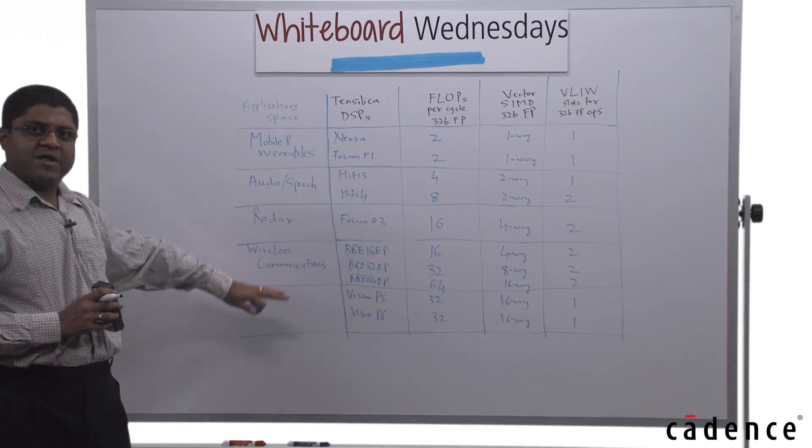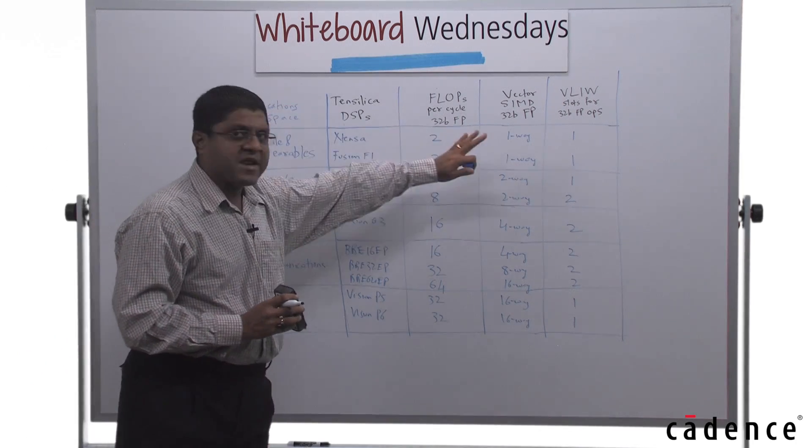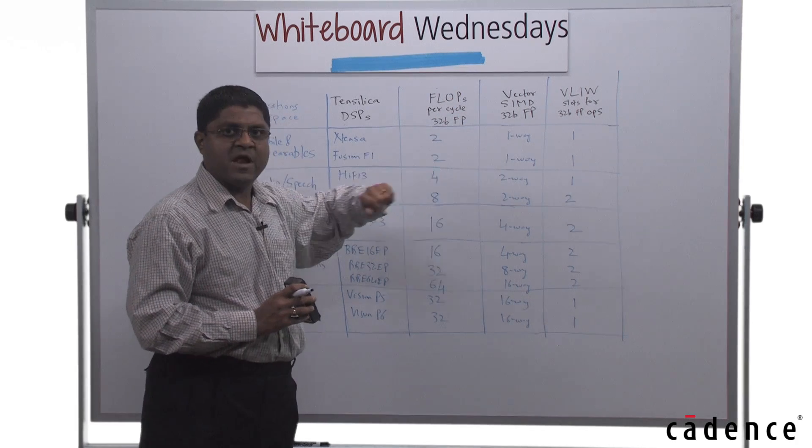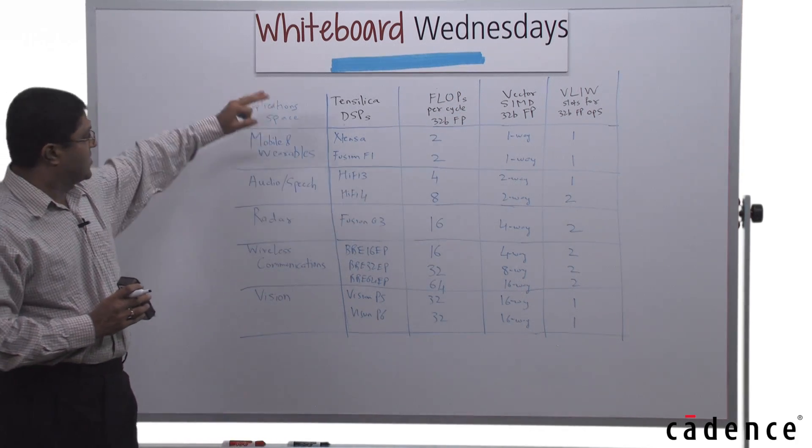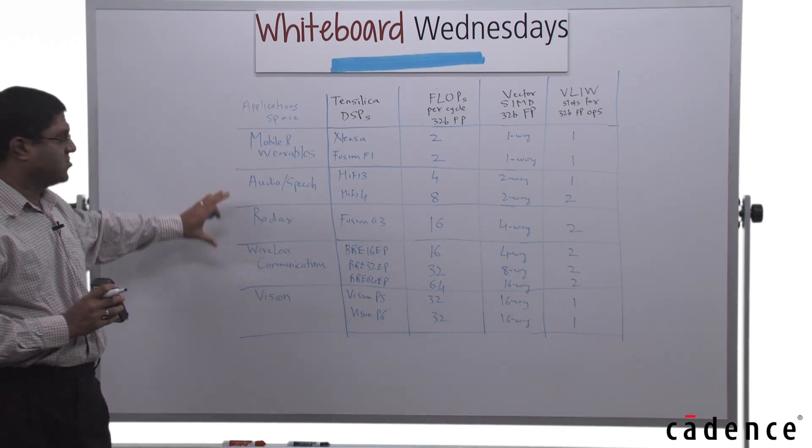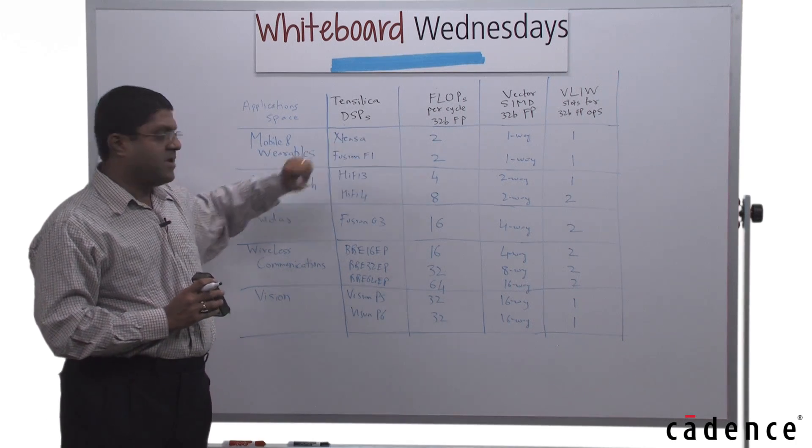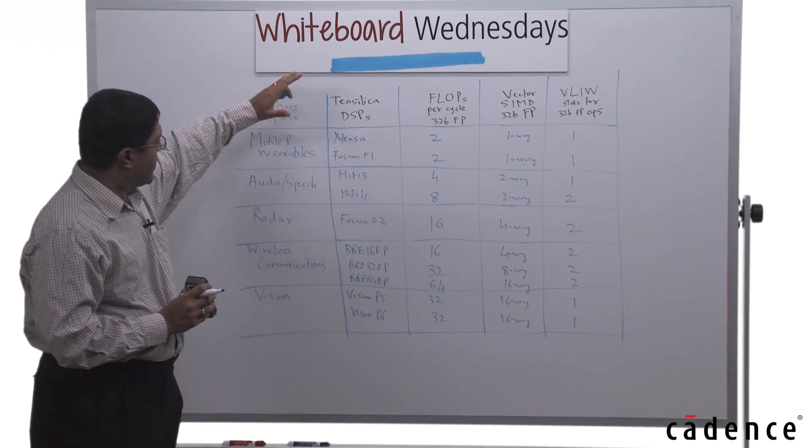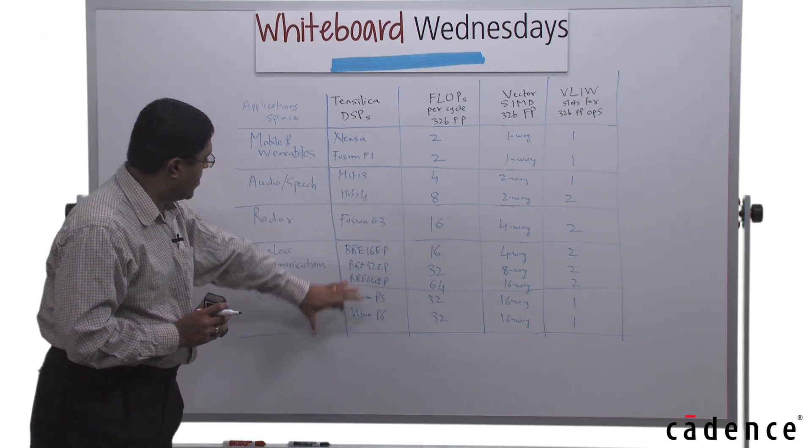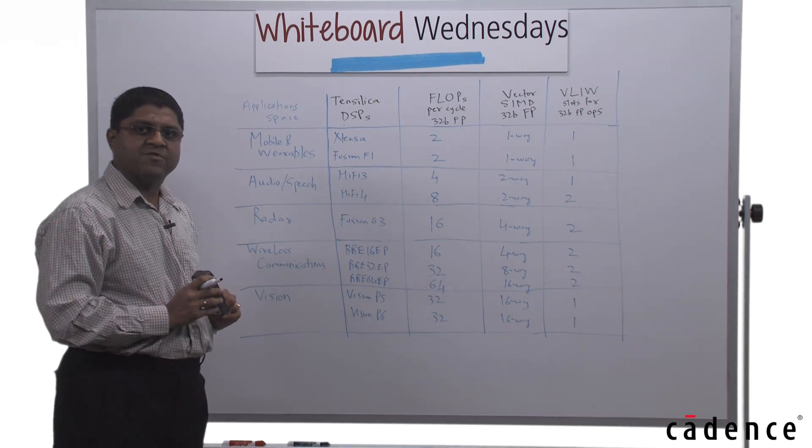This is the range of Tensilica DSPs with floating point support and with their capabilities in terms of FLOPS per cycle, their SIMD and VLIW. With this range of DSPs, different needs for different application spaces in terms of the compute capability is served by the entire family, starting from low to moderate end capabilities to high-end floating point capabilities for the wireless communications and vision space.